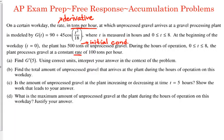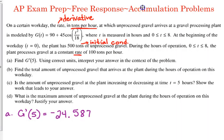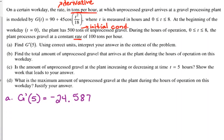Press diamond to get an approximation — you don't want to give it to them in terms of sine. So the answer to part A: write and label it G prime of five is equal to negative 24.587. Remember, it's always three numbers after the decimal and you just stop — don't worry about rounding. That's one point for being able to plug that into your calculator. The second point says, using correct units, interpret your answer in the context of the problem.